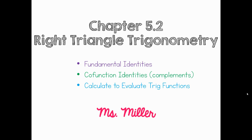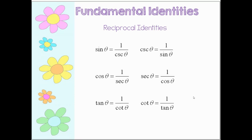Let's look at our identities. In our last lesson we looked at our reciprocal identities. The sine of theta is equivalent to 1 over the cosecant of theta. Cosecant of theta is equal to 1 over sine. Cosine of theta is equal to 1 over secant. Secant of theta is equal to 1 over cosine — theta is just like saying x, sometimes we see the Greek letter beta or any variable, but a lot of times we use theta. Tangent of theta is equal to 1 over cotangent of the same angle. Cotangent of theta is equal to 1 over tangent. These identities are very important; you will need to have these memorized.